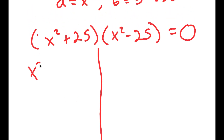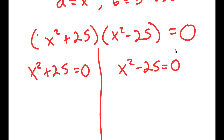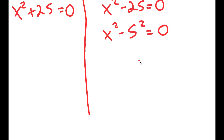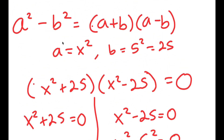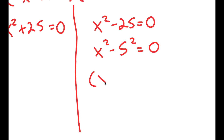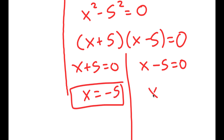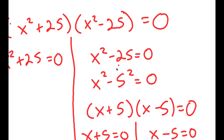This gives me two equations: x squared plus 25 equals 0, and x squared minus 25 equals 0. I'm going to first solve x squared minus 25 equals 0. I'll rewrite 25 as 5 squared to make it easier. Now I use the difference of squares property again, getting x plus 5 times x minus 5 equals 0. This gives me x plus 5 equals 0 and x minus 5 equals 0, so x equals negative 5 and x equals 5.